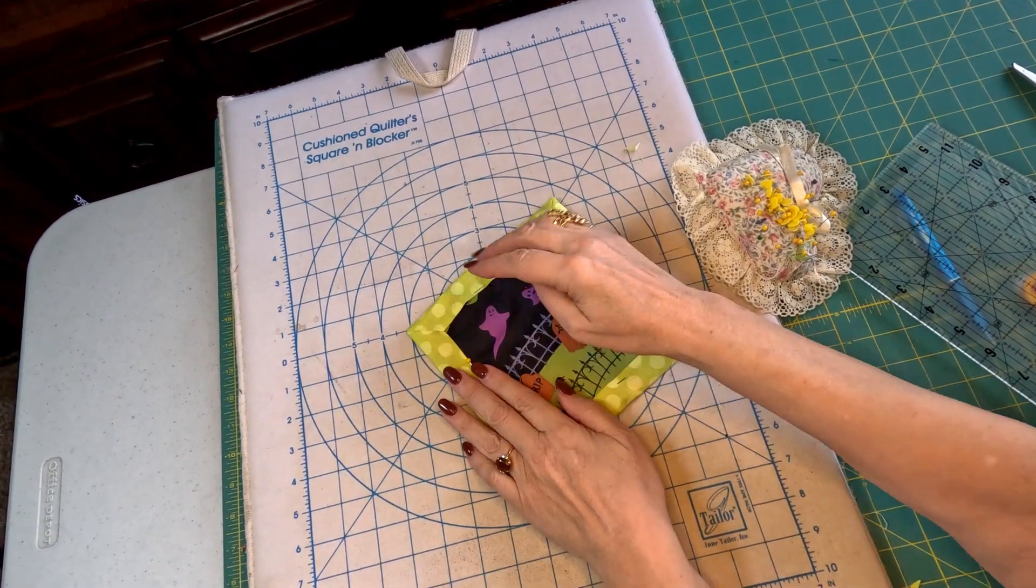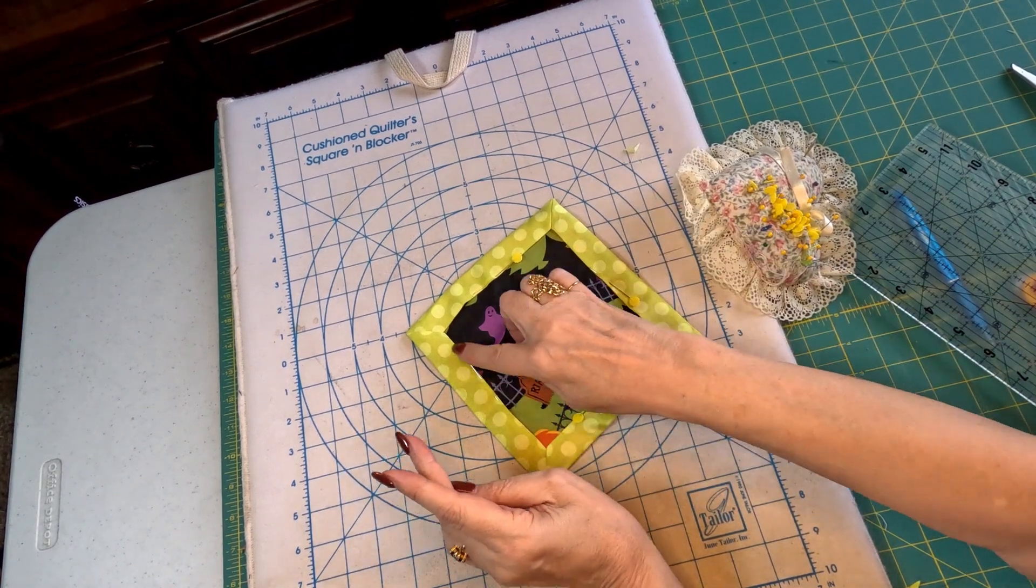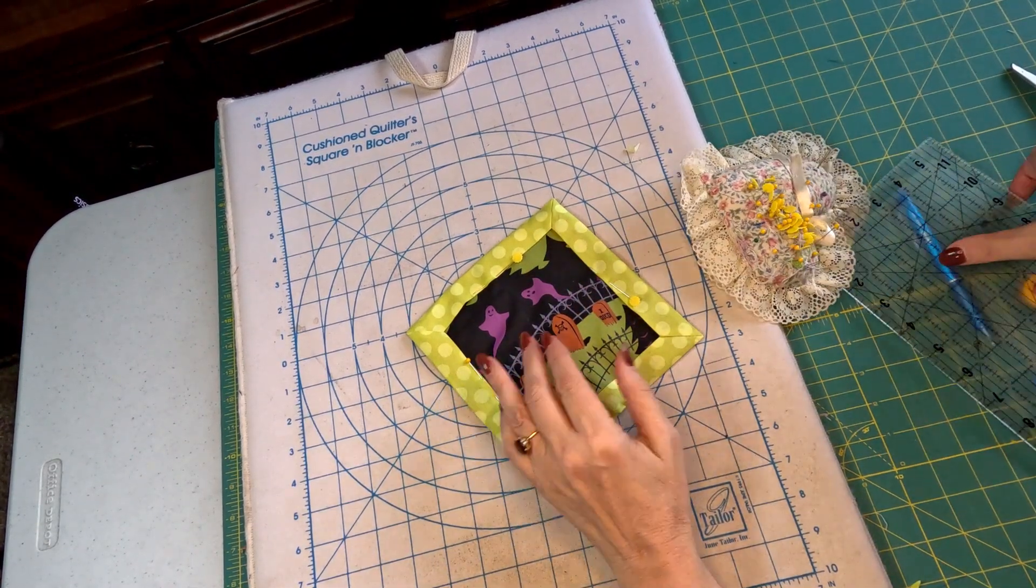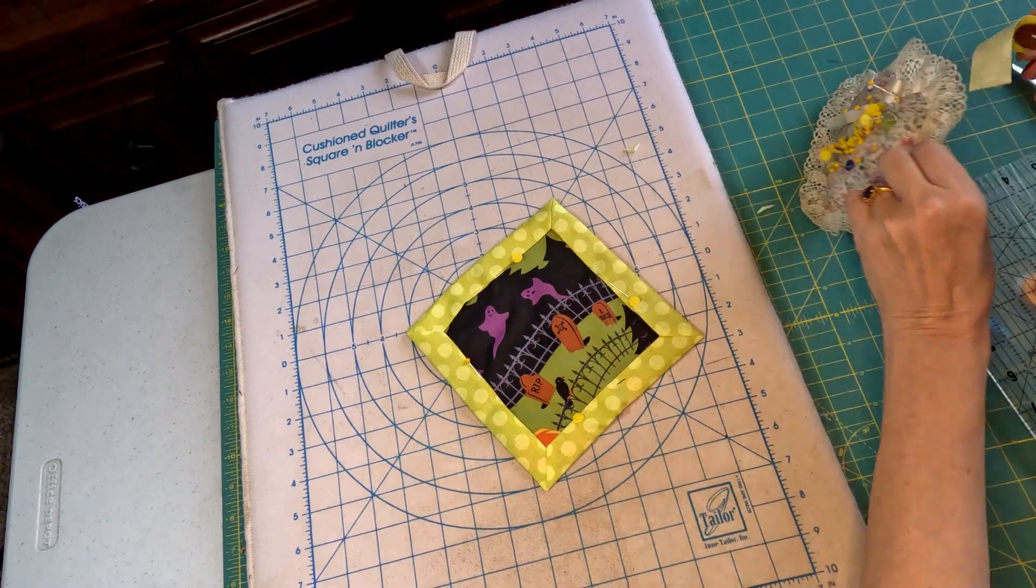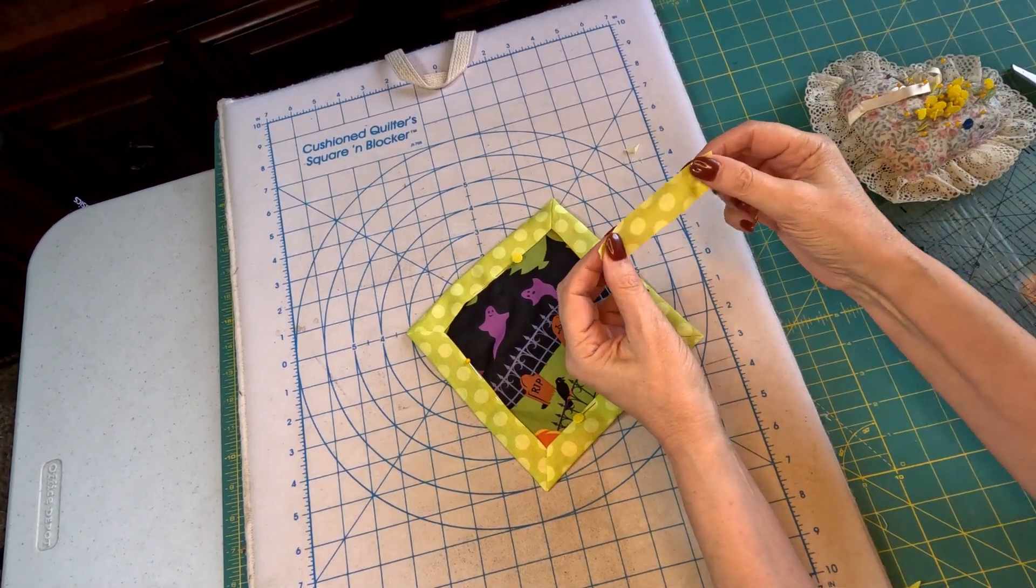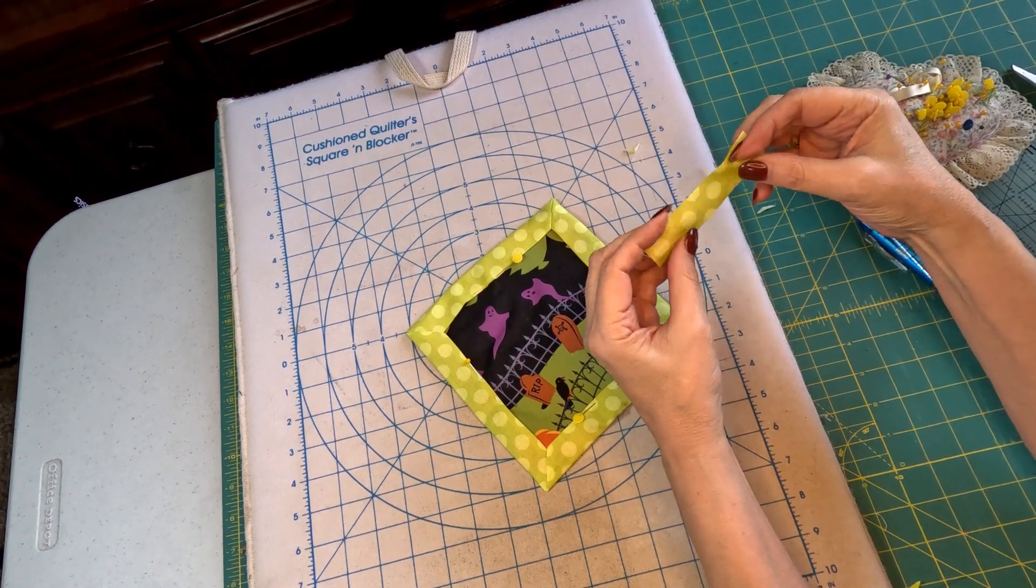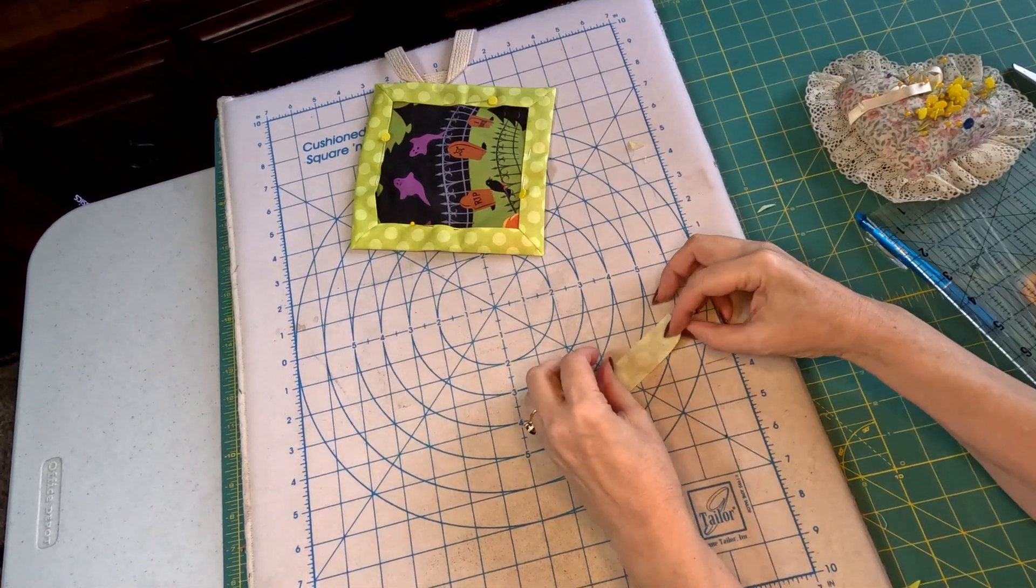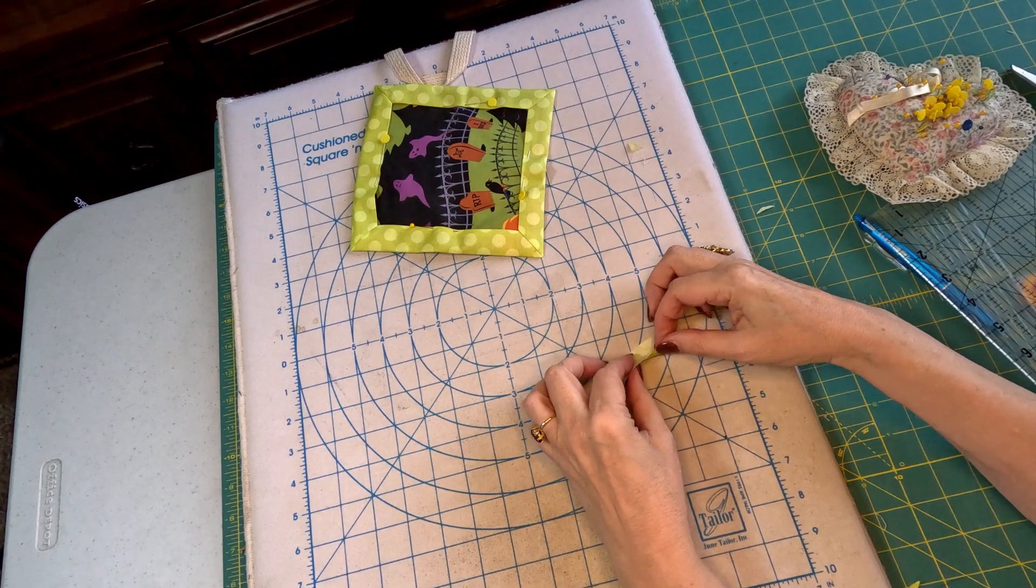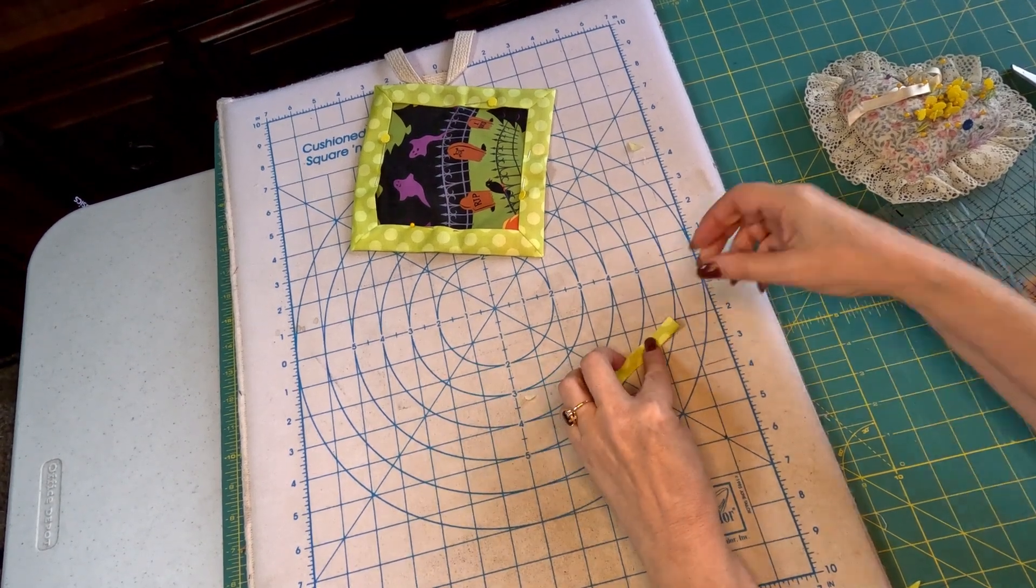Now we're going to take it to the sewing machine and just top stitch right next to the edge. We're also going to take our loop, or what's going to be a loop, and we want to do it like we did all the wrist straps that we made purses with.